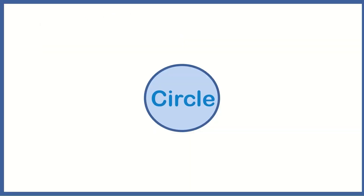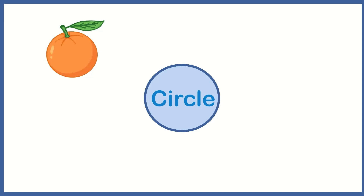Our next shape is circle. This is a circle. There are many circles in the world. Let's look at some examples. This picture of an orange looks like a circle.